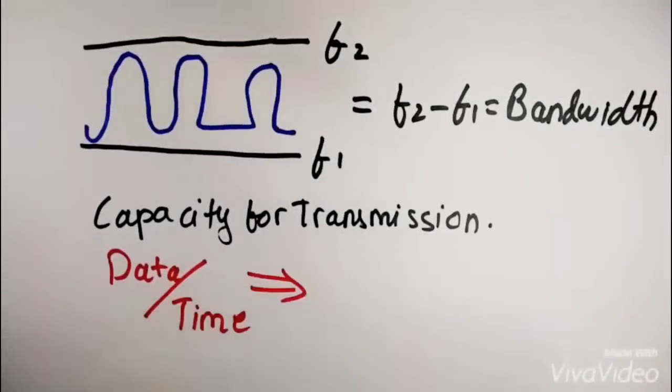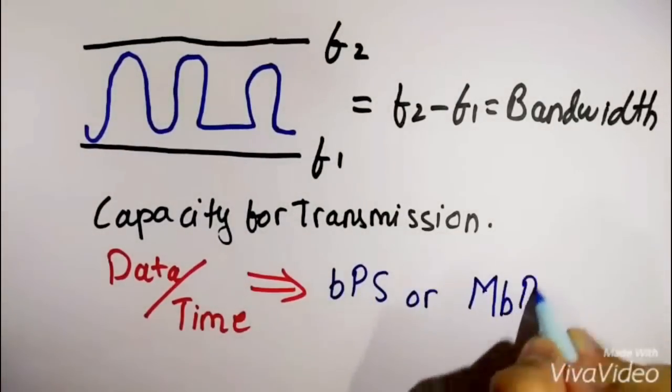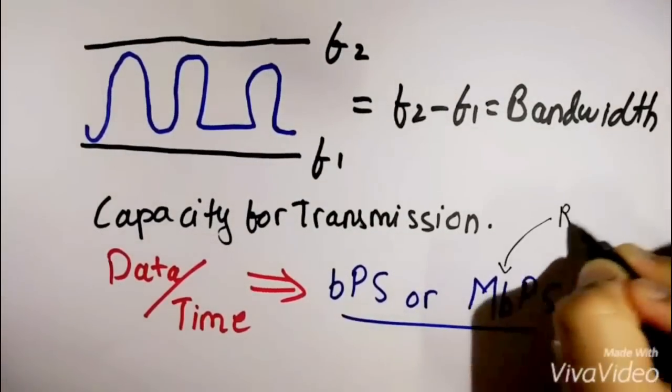Bandwidth can also be defined as the data transmitted per unit time, which is measured in bits per second or megabits per second.